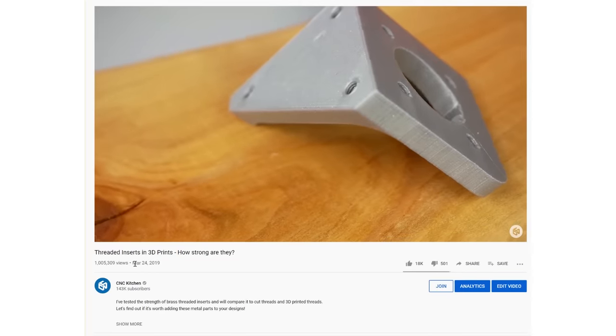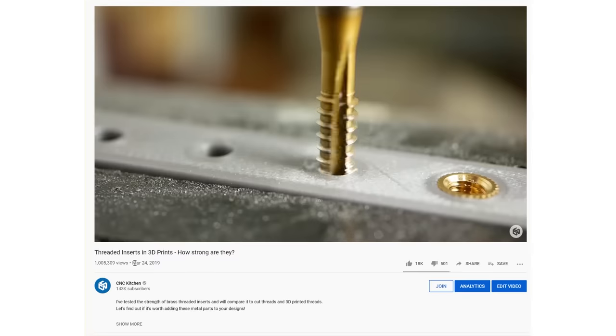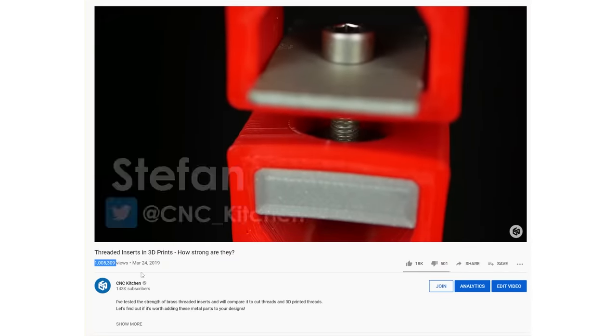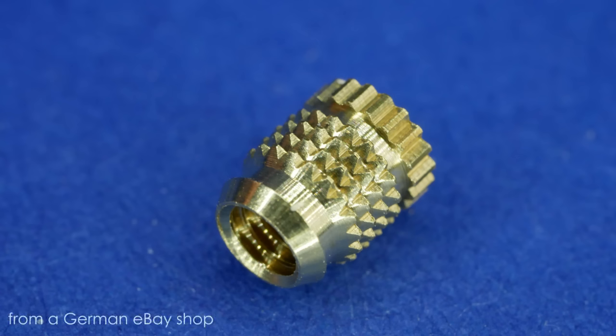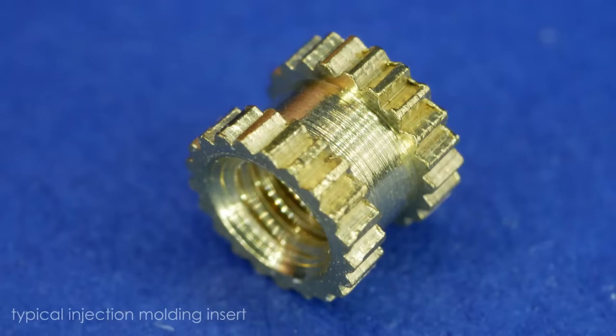Almost a year ago I released a very popular video on threaded inserts for 3D prints on which I got a ton of suggestions and comments. One of them was that I used for my tests a type of threaded inserts that I found on my local eBay which looks quite a bit different than the typical ones that you find on AliExpress or also on Amazon.